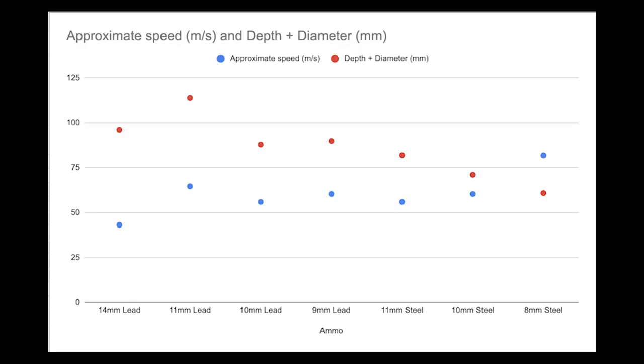And here we've got just the speeds in meters per second and the depth, and so you can see there's pretty remarkable correlation between the speeds and the depth. So it looks like my estimations of the speed must be pretty spot-on. I was a little bit surprised by the 8mm steel there which was significantly lower penetration compared to what you might expect from its speed. So maybe that just goes to show who knows, but otherwise pretty happy and pretty much what I expected actually apart from the 14mm lead.